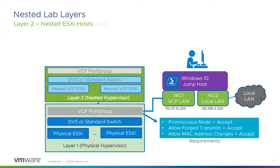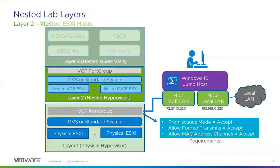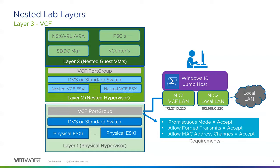We're going to build all this on a single physical host or multiple physical hosts, depending on your lab environment. From there, we're going to start building out what we call layer two — the components that Cloud Foundation runs on top of. Cloud Foundation needs at a minimum four ESXi hosts. We'll nest four ESXi hosts on top of your layer one physical host and create the distributed switch, port groups, and everything necessary to continue the installation of layer three — where we install vCenter, the SDDC manager, NSX components, vRealize components, and anything else that comes with VMware Cloud Foundation.